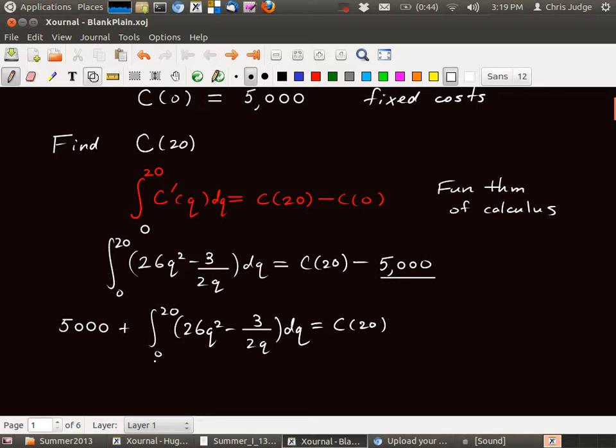Now, if you have a calculator, you can use a calculator to figure this out. You can use your second function and your integral button. Or you can graph this function and then use your calculator to figure out what this value is. And then you would add it to 5,000, and that would give you the value at C of 20.